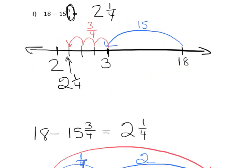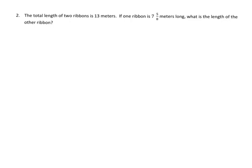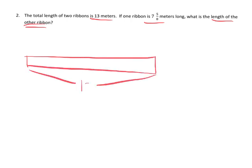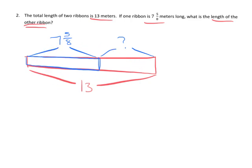The last problem for this video: the total length of two ribbons is 13 meters. If one ribbon is 7 and 5-eighths meters long, what is the length of the other ribbon? I'll draw a tape diagram — one part is 7 and 5-eighths, the other part is unknown, and the total is 13. This suggests we need to subtract 13 minus 7 and 5-eighths.